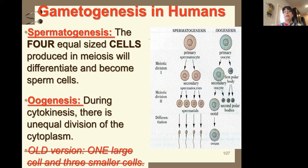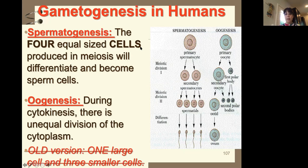Let's talk about gametogenesis in humans. Remember, a gamete is a sex cell — either egg or sperm — and genesis means the creation of. So gametogenesis is the creation of egg or sperm. Spermatogenesis is the creation of sperm. For males, you go stage one, stage two, produce four sperm — and repeat from puberty to death.